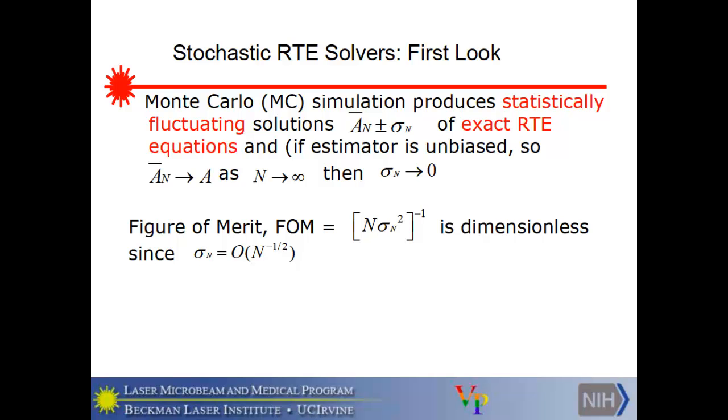In particular, it gives you the first angular moment, and not in any higher ones, unless you use Henyey-Greenstein scattering, in which case the first moment determines the higher ones. By contrast with the analytic solvers, stochastic solvers produce statistically fluctuating solutions. So you get a solution AN bar. The bar is meant to be a mean, a sample mean. And sigma n is the standard deviation after n photons are launched. Fluctuating solutions of the exact RT equations. And if the estimator is what we call unbiased, and I'll talk about that more later. It means that the approximate solution converges to the real solution as the number of photons launched gets indefinitely large.